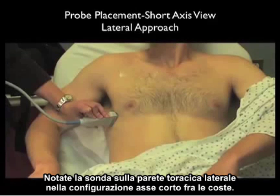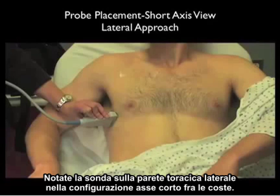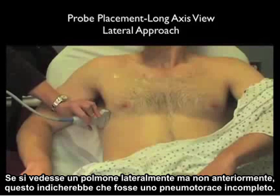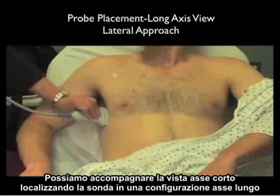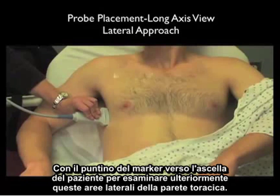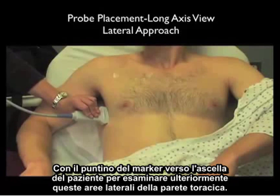Notice the probe on the lateral chest wall in the short axis configuration between the ribs. If lung is seen here laterally but not anteriorly, this would tell you it was an incomplete pneumothorax. We can complement the short axis view by locating the probe into the long axis configuration with the marker dot towards the patient's axilla, to further examine these lateral areas of the chest wall.